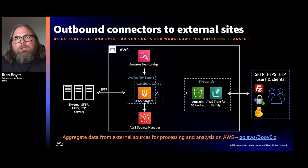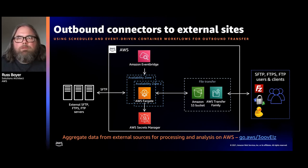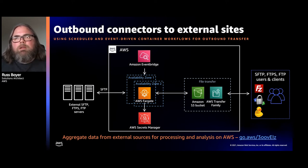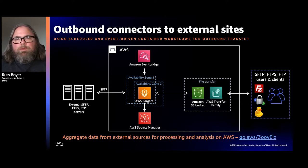The last architecture we'll cover is our outbound connector architecture, important for customers who need to reach out to external managed file transfer providers — either pulling a file in to S3 to serve back to their own end users, or pushing a file out. We published a reference architecture in our blog channel, deployable with a CloudFormation template.